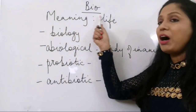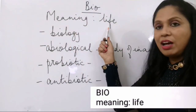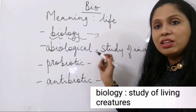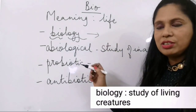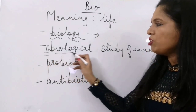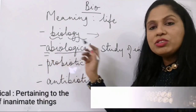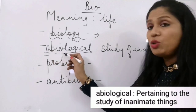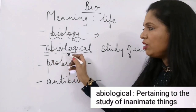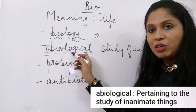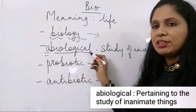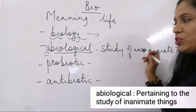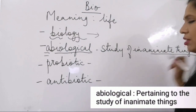The root word bio means life, so biology is the study of living creatures. Abiological — the prefix a- means no or not, so abiological is the study or science of inanimate things, things which are not alive. The suffix -logy of course means the study of.